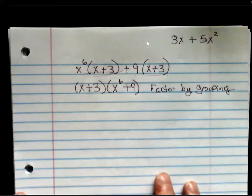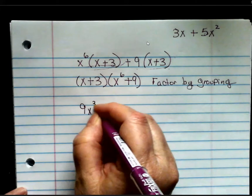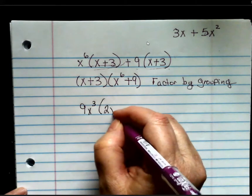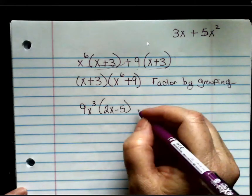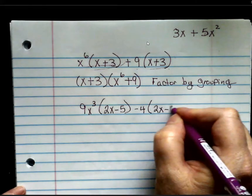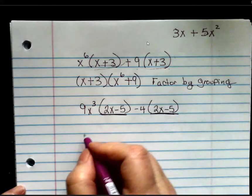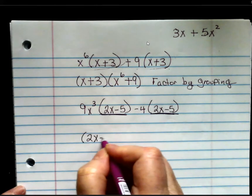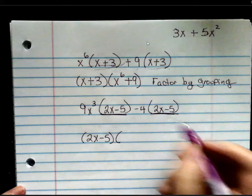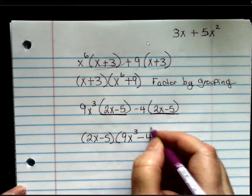So, let's take a look at another one. 9x cubed times 2x minus 5 minus 4 times 2x minus 5. This is my common term that I'm going to pull out. And then what's left is 9x cubed minus 4.